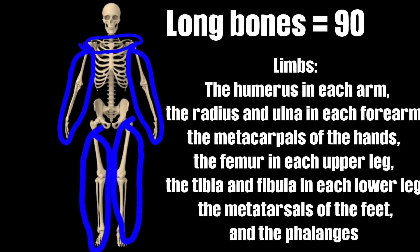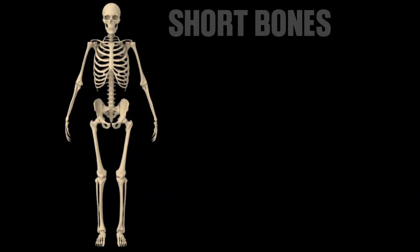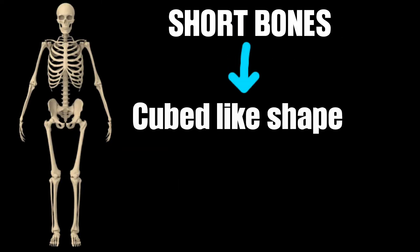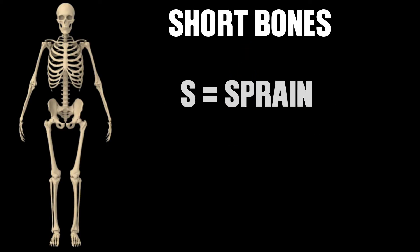As you may notice, we covered the bones of the arms and legs, but we have not yet covered those of the wrist and ankle — and this takes us to short bones. Short bones are named for their cube-like shape, as they are approximately the same length and width. The trick in remembering short bones is to use the letter S to remember sprain. Since the ankles and wrists are common joints that are sprained, this helps you remember that the bones of the wrist and ankle are short bones.